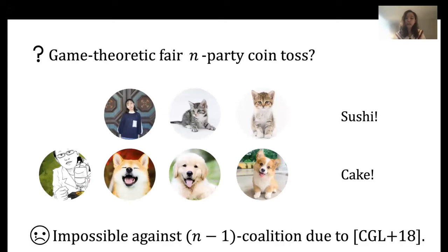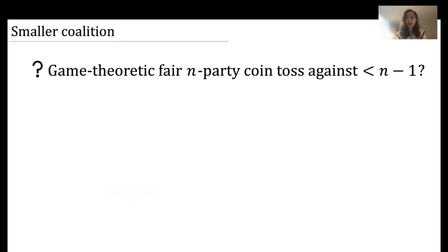Unfortunately, game theoretic fairness for multi-party coin toss protocol is shown to be impossible against an n-minus-one-sized coalition due to Chen et al.'s result. So a natural question to ask is: can we achieve game theoretic fairness for multi-party coin toss against a smaller-sized coalition — let's say majority-sized, but not necessarily n minus one? And the answer is yes.